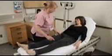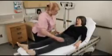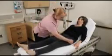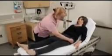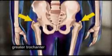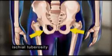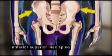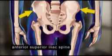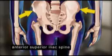Now palpate the hip joints, paying particular attention to swelling or tenderness in the area of the greater trochanter, the ischial tuberosity, and the anterior superior iliac spine. This portion of the exam may not be possible if the patient is significantly overweight.